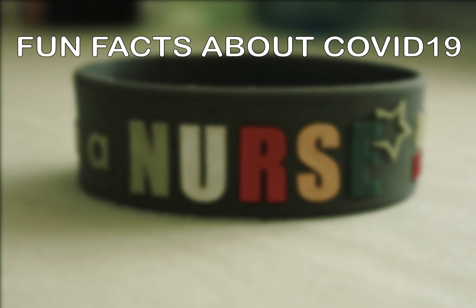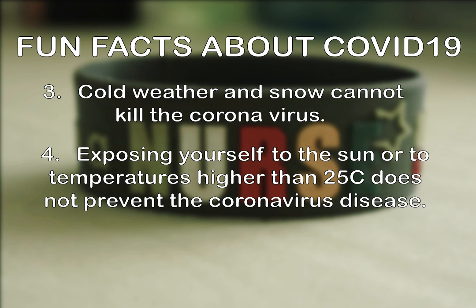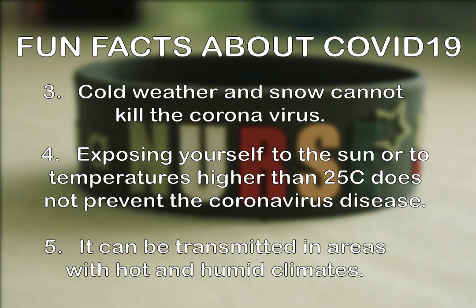For numbers 3, 4, and 5, it's almost the same thing. It states that cold weather and snow cannot kill the coronavirus. Exposing yourself to the sun or to temperatures higher than 25 degrees Celsius does not prevent the coronavirus disease, and it can be transmitted in areas with hot and humid climates. There is nothing to do with the weather — as of this moment, there is still not enough evidence or studies that hot or cold climate can kill the virus.